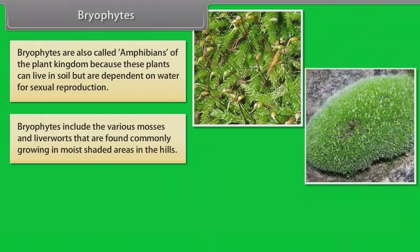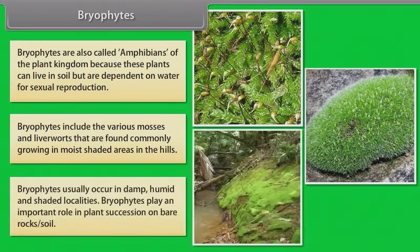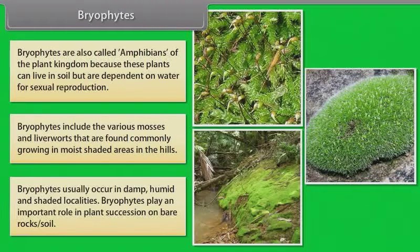Bryophytes include the various mosses and liverworts that are found commonly growing in moist shaded areas in the hills. Bryophytes usually occur in damp, humid, and shaded localities. Bryophytes play an important role in plant succession on bare rocks or soil.